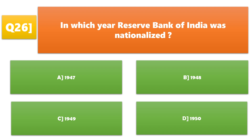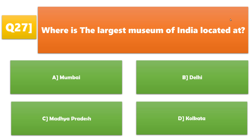In which year was the Reserve Bank of India nationalized? A. 1947, B. 1948, C. 1949, D. 1950. C. 1949 is the correct answer.